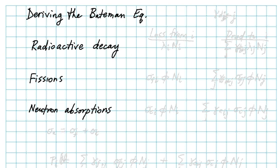We talked about radioactive decay, fissions, and neutron absorption. For each of those we're going to have a loss component, so you have loss from nuclide i, and we have production to i for each of these. That basically ends up giving you your Bateman equation once you've added and subtracted all these.